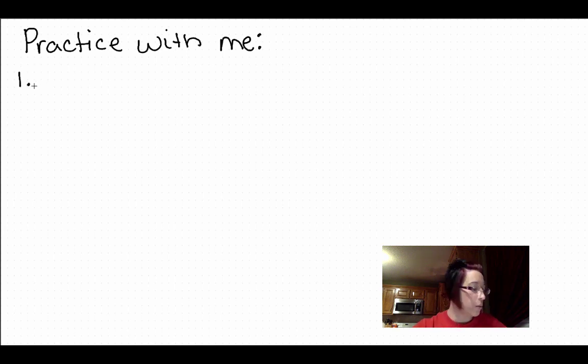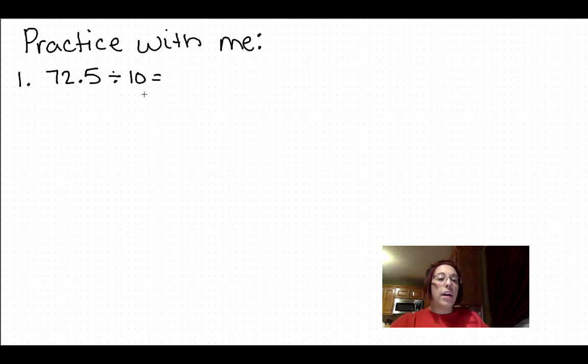Our first practice with me problem is going to be 72.5 divided by 10. Remember for these problems we want to use mental math. We don't actually want to do the division. So our first strategy for success is to count the zeros. The number 10, the divisor, has one zero. That means in 72.5 we're going to take our decimal, move it one place to the left because we are dividing. So it's going to be 7.25.